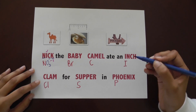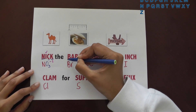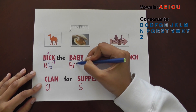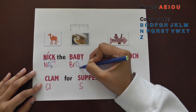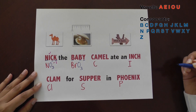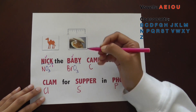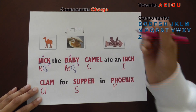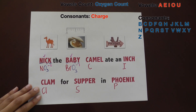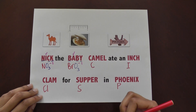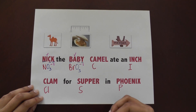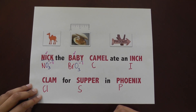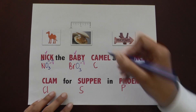The next word, Baby, has 3 consonants — B, B, and Y — which makes O3. It also has 1 vowel, which makes the charge negative 1. This gives us the polyatomic ion Bromate, which is BrO3-1. Use the same process for the rest.